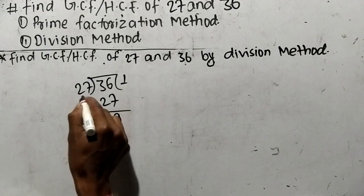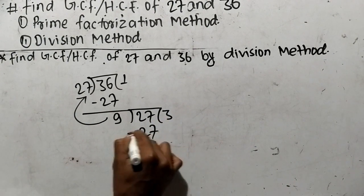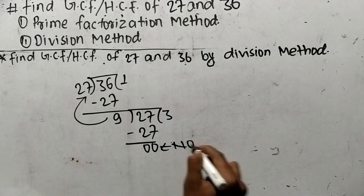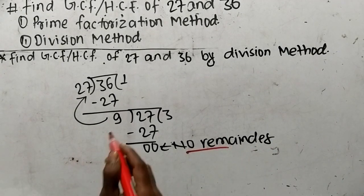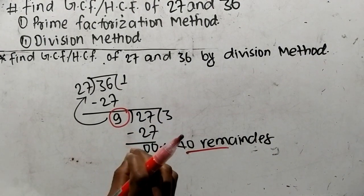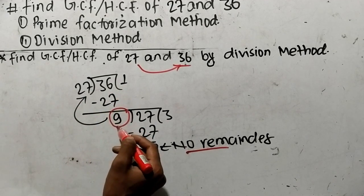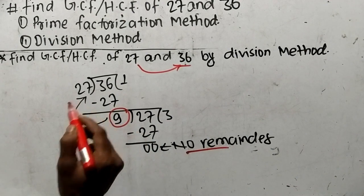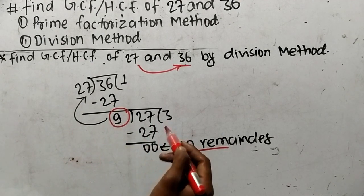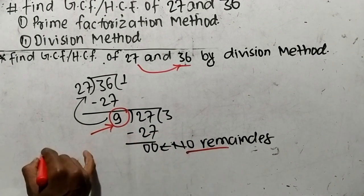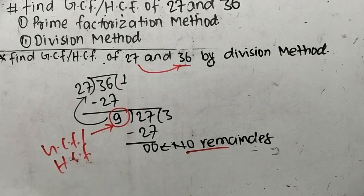Here 9 is the remainder, so we have to again divide the divisor 27 by 9. So 9 divides 27 as 9 times 3 equals 27, giving remainder 0. We keep dividing until there is no remainder. Since 9 divides 27 with no remainder, 9 becomes the GCF or HCF. The divisor that yields no remainder becomes the GCF or HCF. Therefore GCF or HCF is equal to 9.